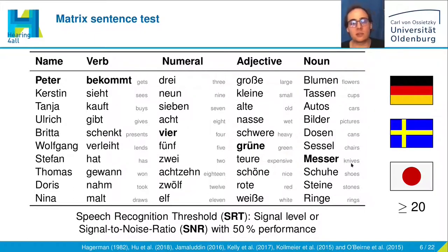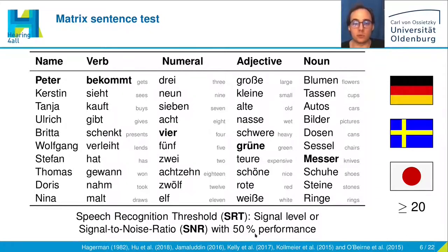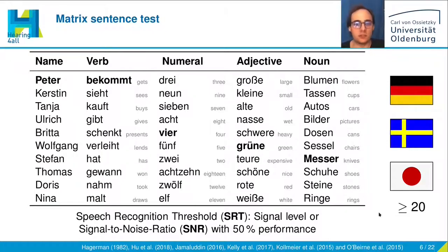With this test we can measure the so-called speech recognition threshold, the SRT, which is the signal level or signal-to-noise ratio with 50% word recognition performance. This test is available in more than 20 different languages, for example German, Swedish, or Japanese.